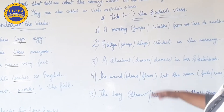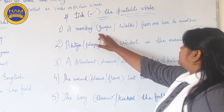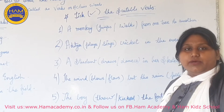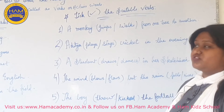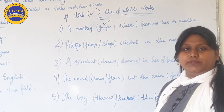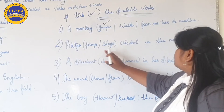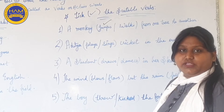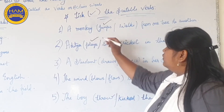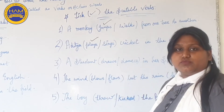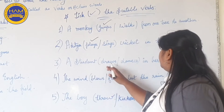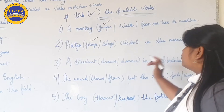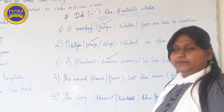Now moving on to another example — write the suitable verbs. A monkey jumps or walks from one tree to another. What does a monkey do? A monkey jumps, so 'jumps' will be the suitable verb. Aditya plays or sings cricket in the evening. What does Aditya do? Aditya plays in the evening, so 'plays' will be the suitable verb. A student draws or dances in a sketchbook. What will you do in your sketchbook? You will draw, so 'draw' will be the verb.